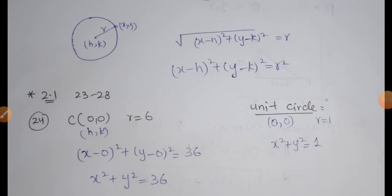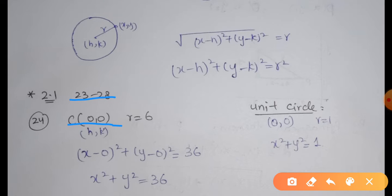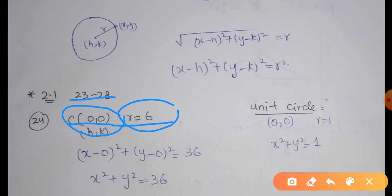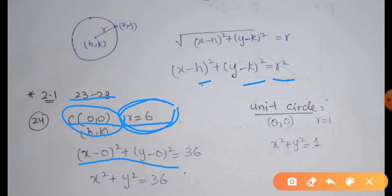As an exercise, 2.1 questions 23 to 28: you are given some center point and radius and you have to find out the equation of the corresponding circle. In question number 24, we are given the center point to be the origin (0, 0) and radius equal to 6. We put the value of the center — that is H, K — into the standard form: X minus 0 whole square plus Y minus 0 whole square.